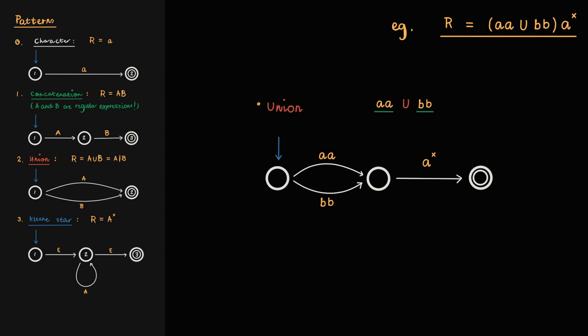Incidentally, both of the operands of the union operation are concatenations of two characters, so their transitions can be replaced with the concatenation pattern.